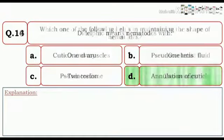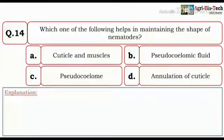Come to the next question. Which one of the following helps in maintaining the shape of nematodes? And the given options are cuticle and muscles, pseudocoelomic fluid, pseudocoelom, and annulation of cuticle. So here the correct option would be pseudocoelomic fluid.